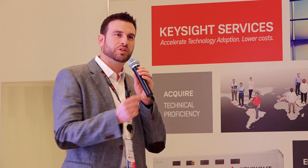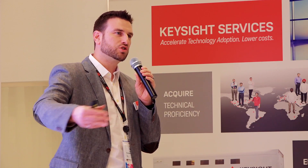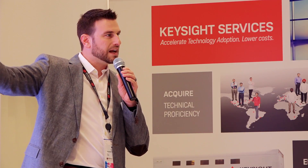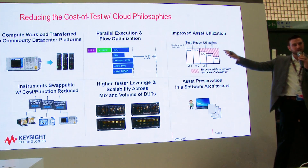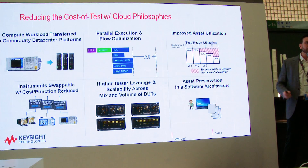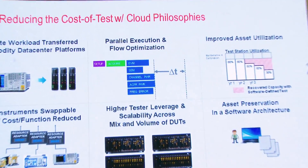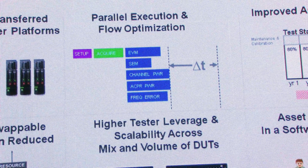For increasing throughput and asset utilization, it's all about the software. With traditional measurement infrastructure everything was done sequentially — set up, acquire, perform measurement, then repeat for each measurement. Through cloud and data center-based concepts, you can acquire once and completely parallelize your measurements, as shown in that middle top box. And because everything is done in software, you can implement schedulers and optimization engines for your hardware assets, increasing utilization significantly.